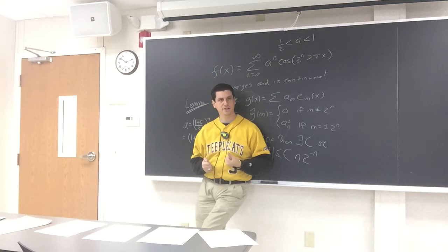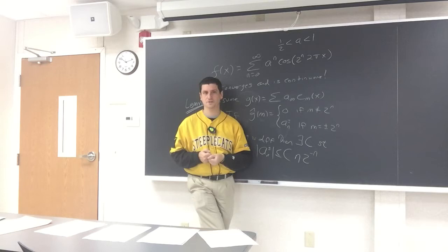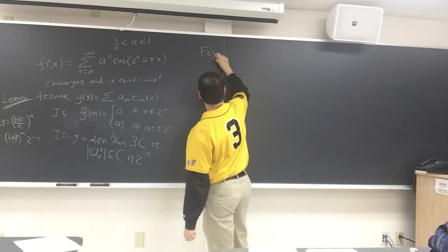The note from my professor says Weierstrass distressed 19th century mathematicians when he came up with this example, because it was thought that if you're continuous, you should be differentiable at least somewhere, probably even in most places. So the question is: how do we prove a lemma like this? We're going to use the Fejér series.